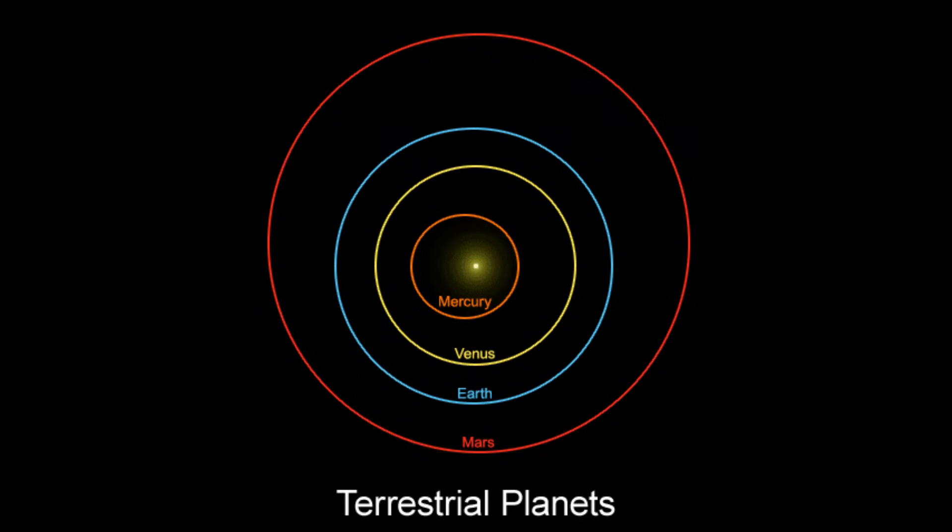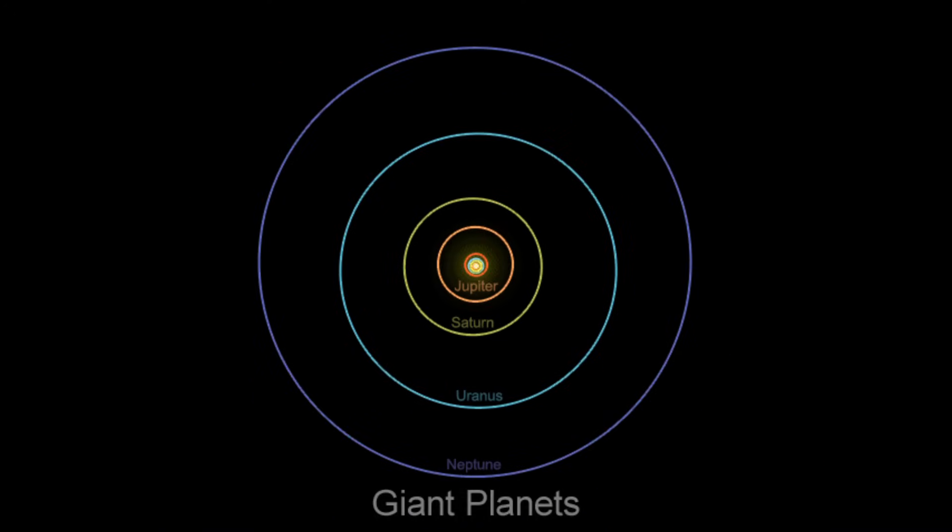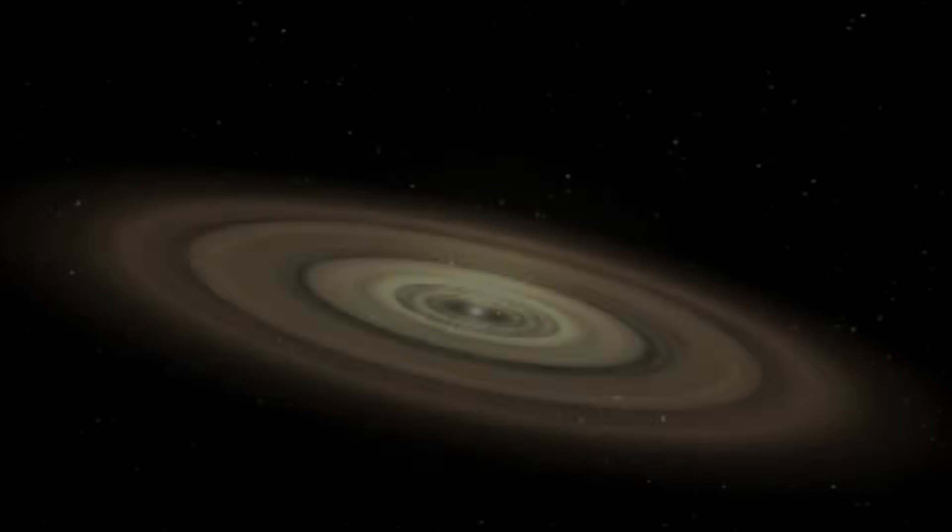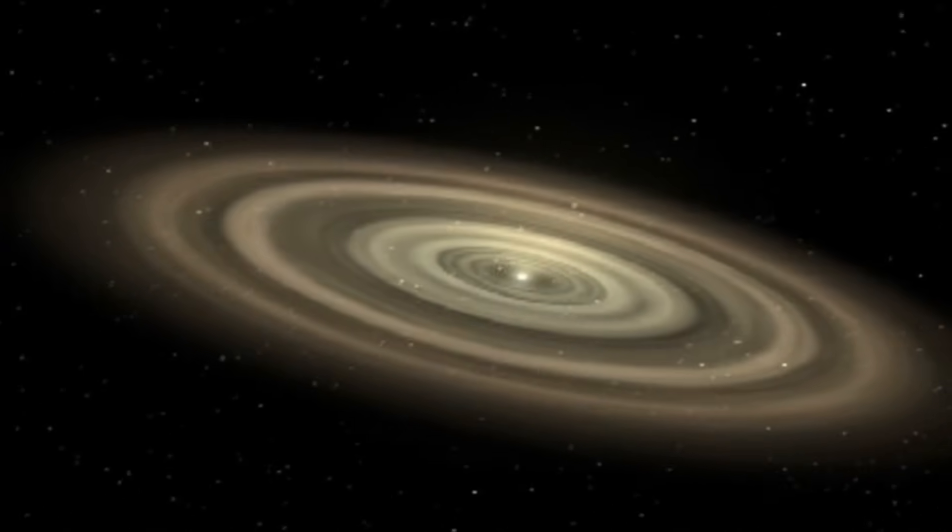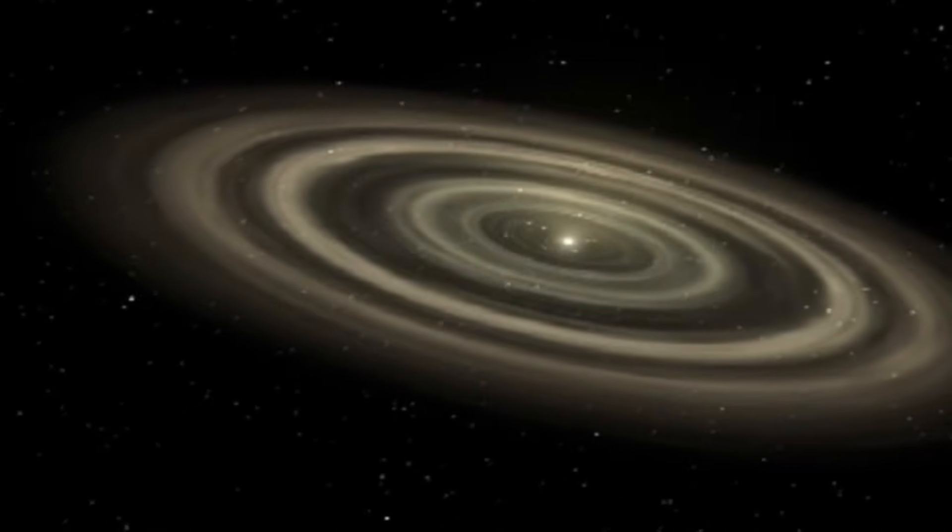This is the orbit of the terrestrial planets of our solar system, and here we see the orbits of the giant planets. Their paths appear nearly circular, a result of the stable conditions in which they formed and evolved around the Sun.